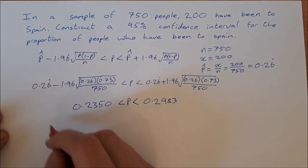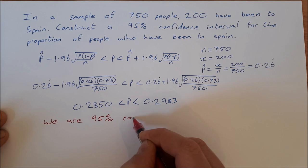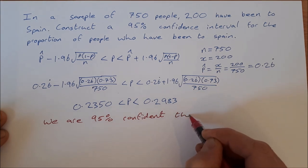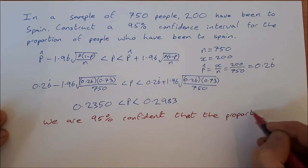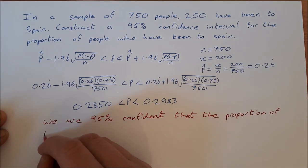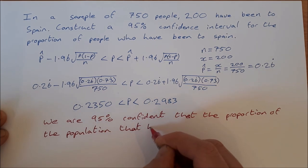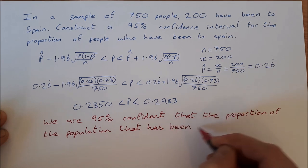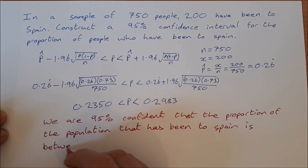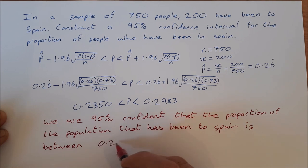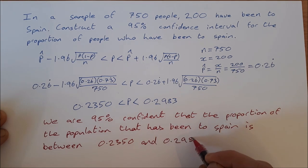In the context of the question: we are 95% confident that the proportion of the population that has been to Spain is between 0.2350 and 0.2983.